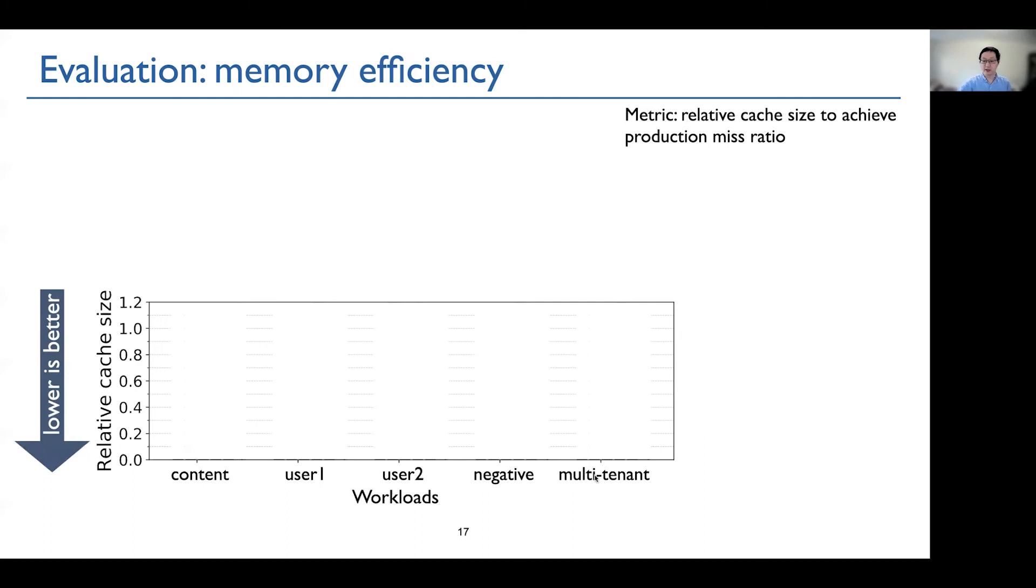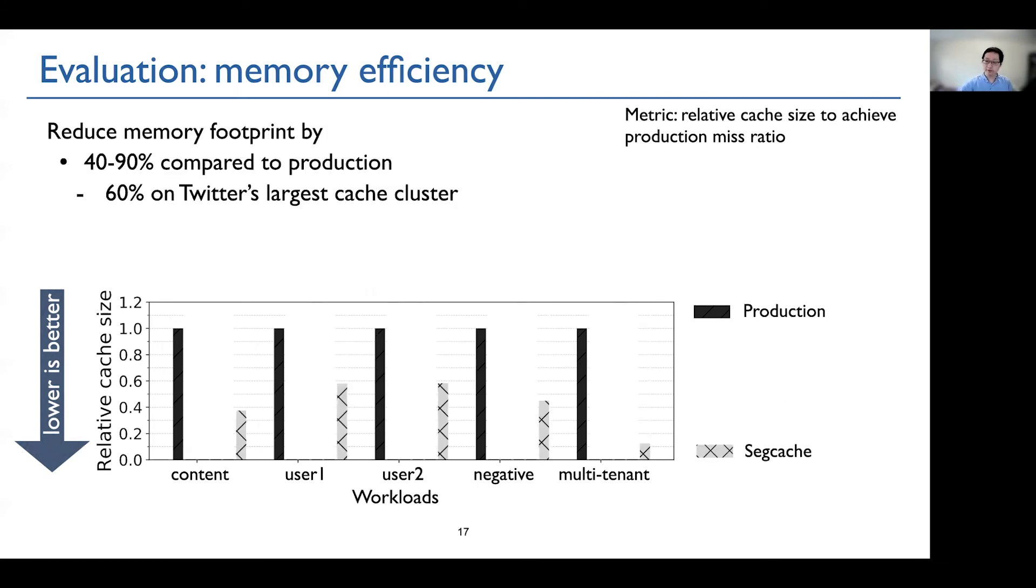The lower, the better. The X axis is showing the workloads. First, we show Twitter's production software, which is fixed at 1. Then we show Segcache. We observe that compared to production, Segcache reduces the memory footprint by 40 to 90 percent. Especially on the largest cluster, which is this one, it reduces the memory footprint by 60 percent.